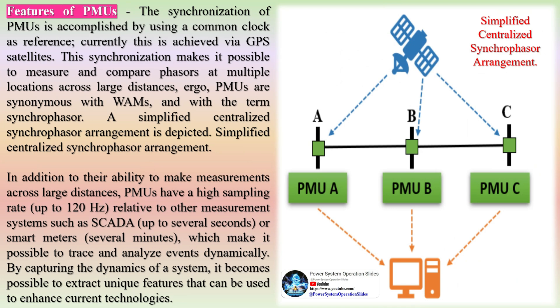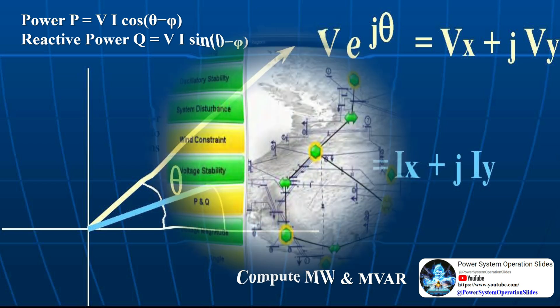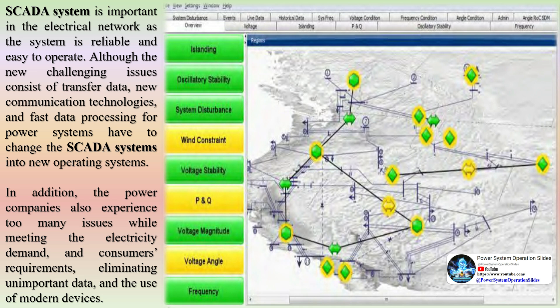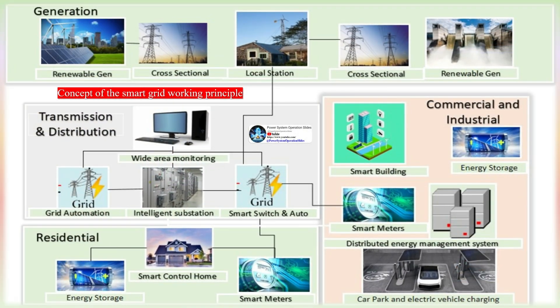The synchronization of PMUs is accomplished by using a common clock as reference, currently achieved via GPS satellites. This synchronization makes it possible to measure and compare phasors at multiple locations across large distances; therefore, PMUs are synonymous with WAMS and with the term synchrophasor. A simplified centralized synchrophasor arrangement is depicted. Different important parameters are included in the operation of PMUs such as wide area management systems (WAMS), phasor data concentrators (PDC), and GPS.